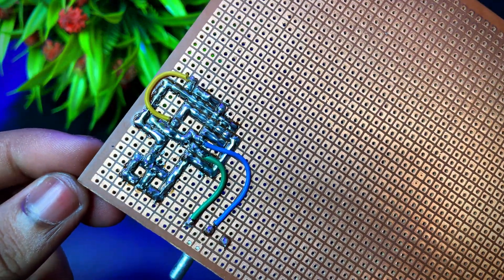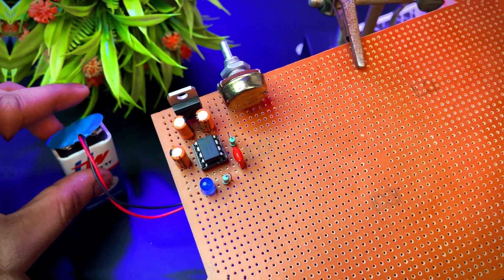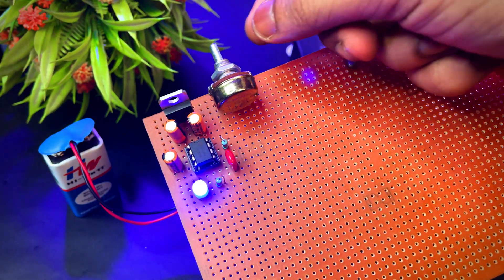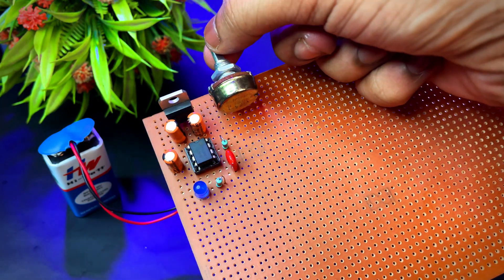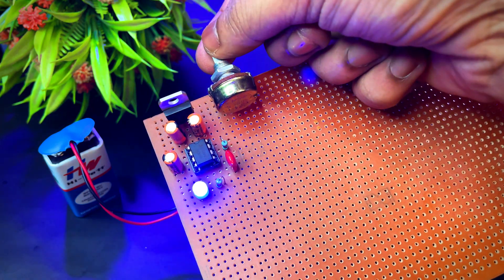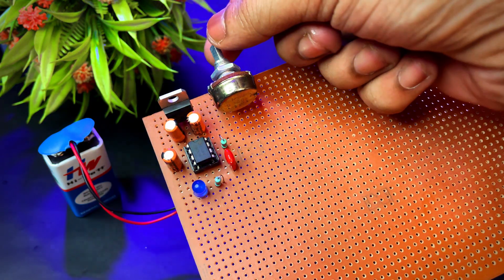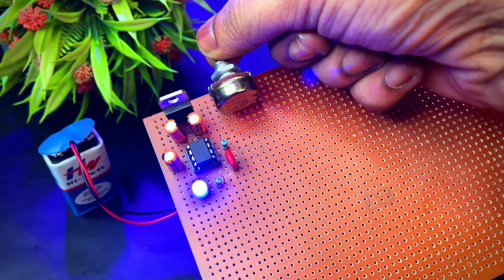Once it's soldered, I tested it by connecting a simple LED. And yes, it's blinking. That means our pulse is working. As I am changing the frequency, the speed of light increasing or decreasing accordingly. And pin 3 is our output pin.